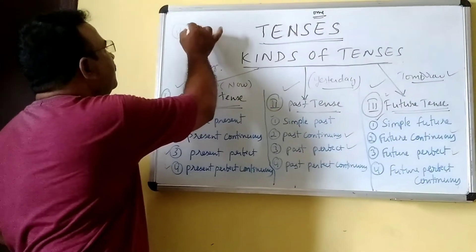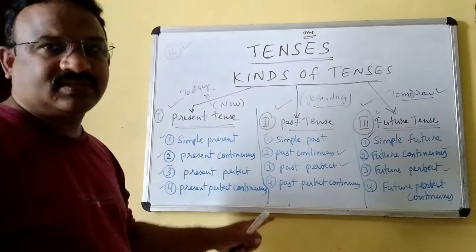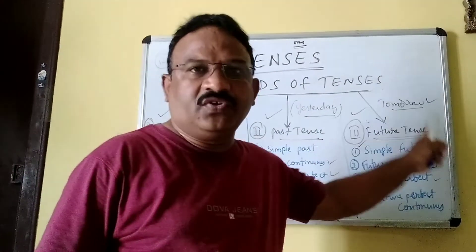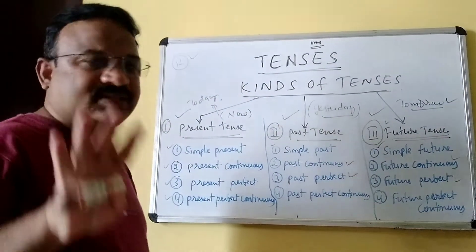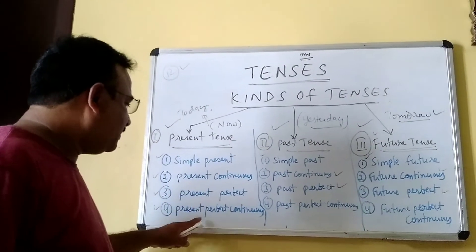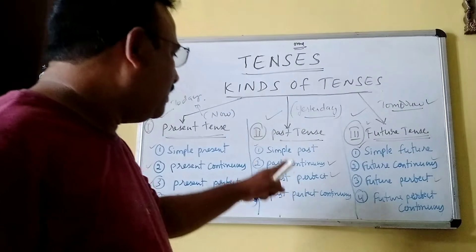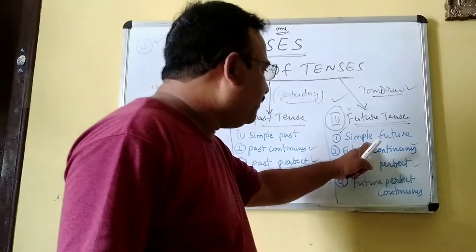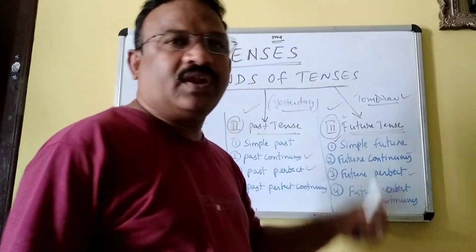There are mainly three tenses — present tense, past tense, and future tense — and each main tense has four subtenses. Present: simple present, present continuous, present perfect, present perfect continuous. Past: simple past, past continuous, past perfect, past perfect continuous. Future: simple future, future continuous, future perfect, future perfect continuous.